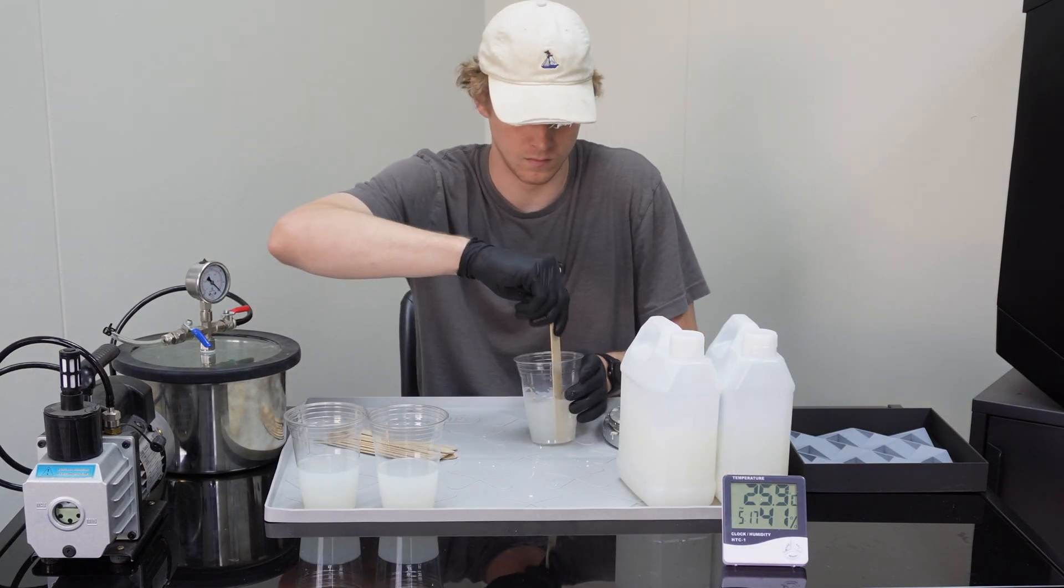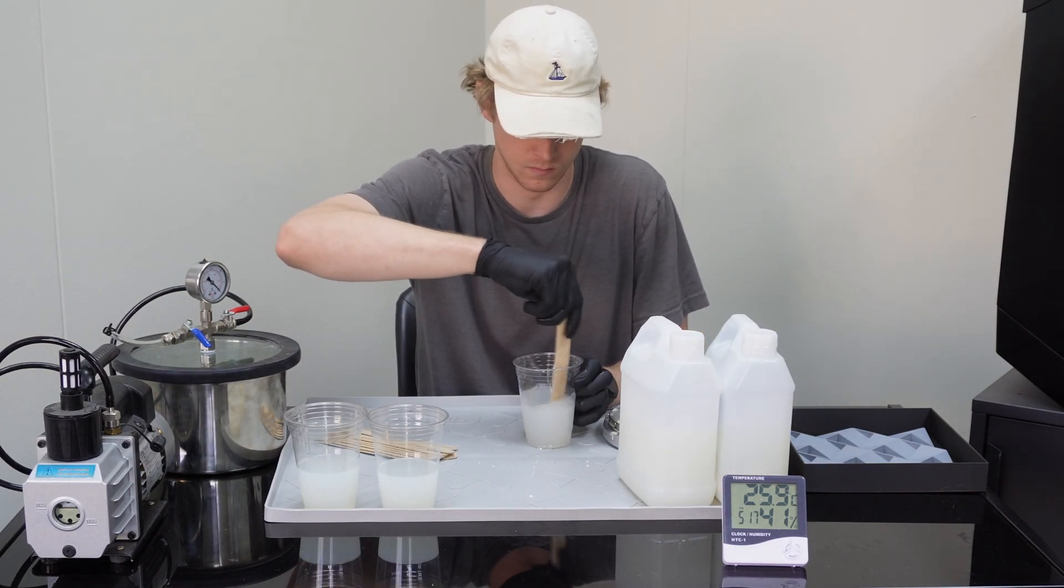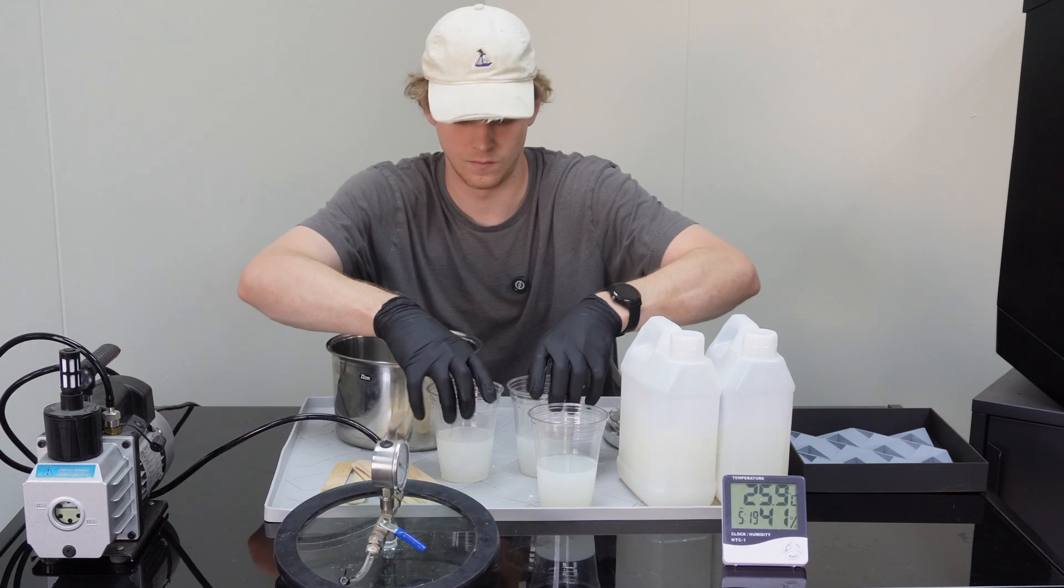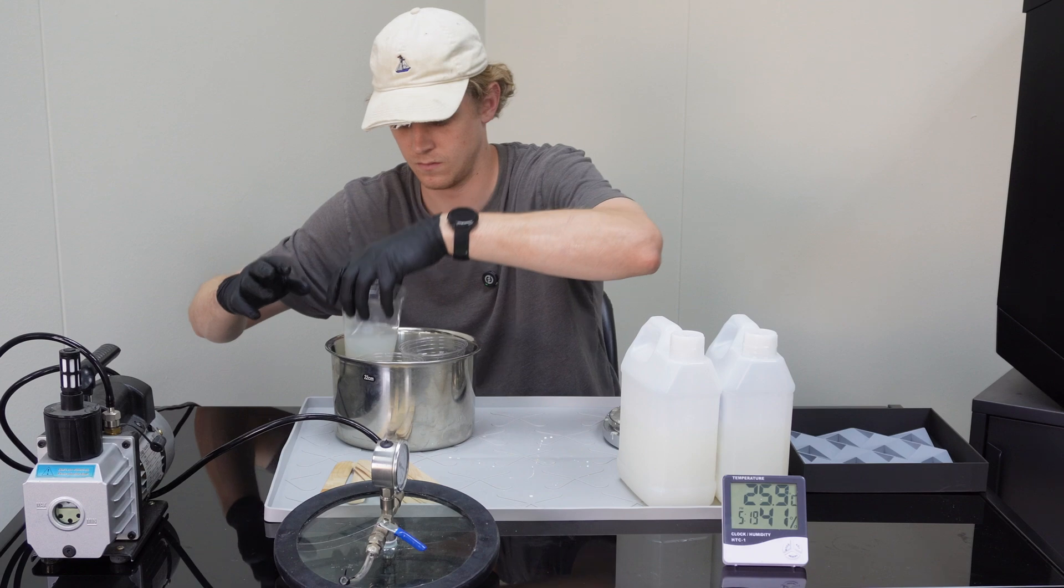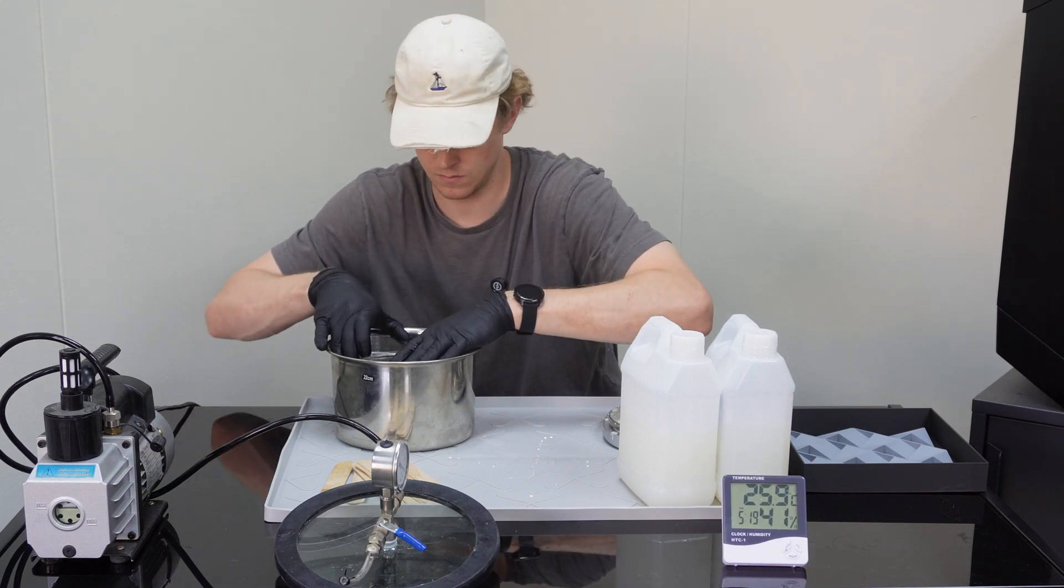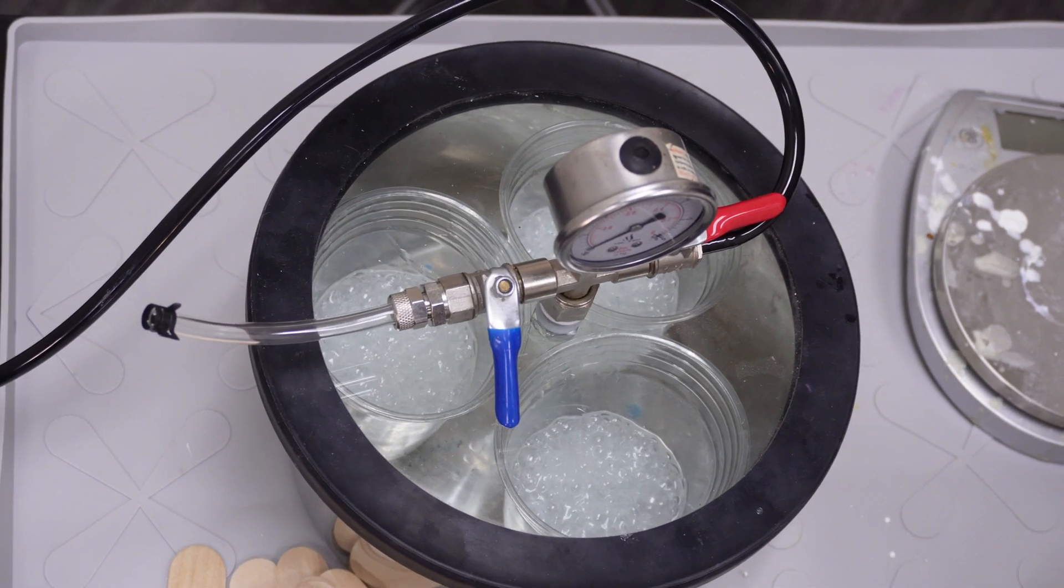Whenever you're mixing a thermoset by hand, whether it's silicone, epoxy, or polyurethane, you'll introduce bubbles to the mixture, which creates defects in your mold and casted parts. I'm degassing because I'm hand mixing and I want to eliminate as much air as possible.